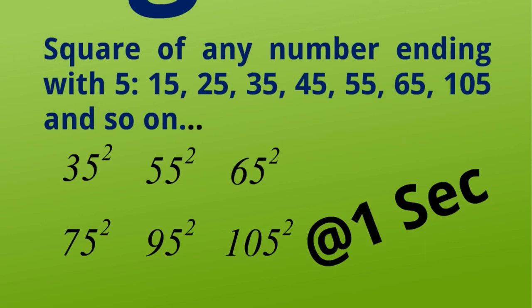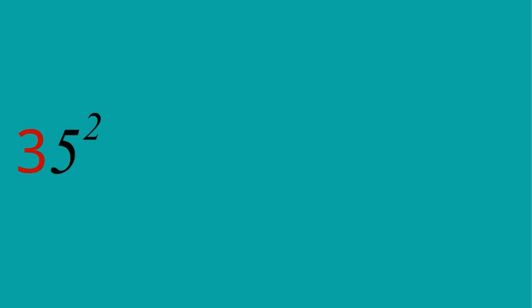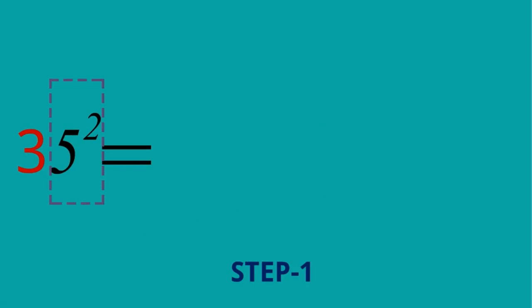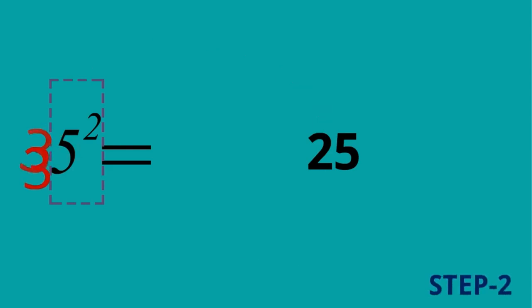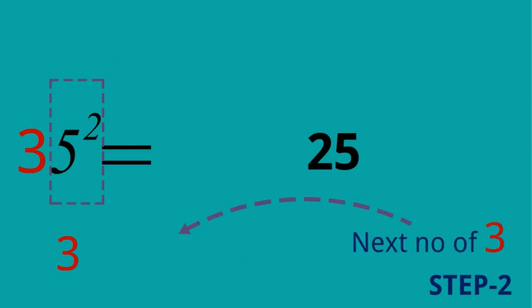We can do it in just one second. Let's start with an example: 35 squared. We will do the entire multiplication in two steps. Step one: 5 squared is equal to 25, and we will keep it here. Step two: we take 3 and the next number of 3, which is 4.